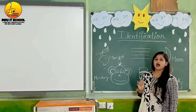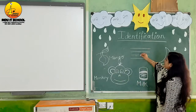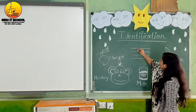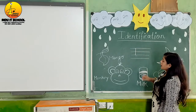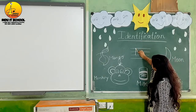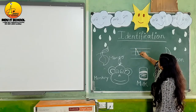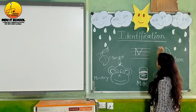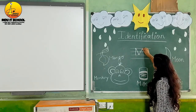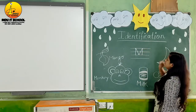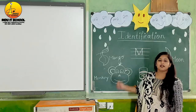Look here, how to write alphabet M. First of all make one standing line and then make one standing line. Again make one standing line and one standing line. This is our alphabet M.